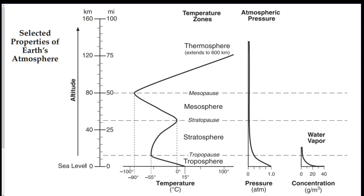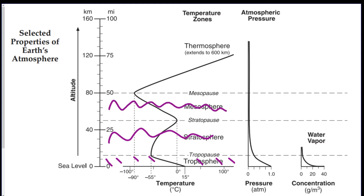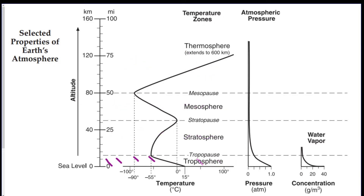Question three: in which two temperature zones of the atmosphere does temperature increase as you increase altitude? For this we need to use the atmosphere chart on page 14. The layers are: troposphere at the bottom, then the stratosphere, then the mesosphere between the dashed lines, and the thermosphere above that.